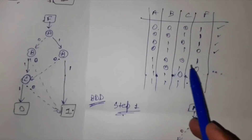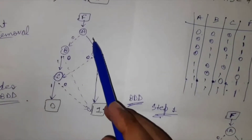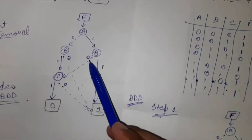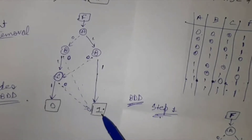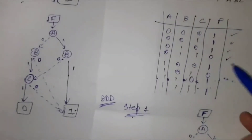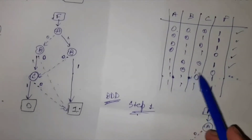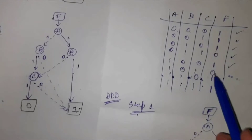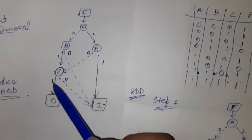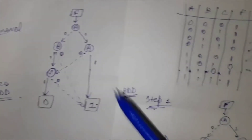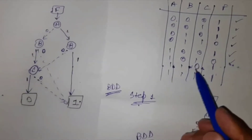The fifth one: 1, 0, 0 is 1. Checking — 1, 0, 0 gives 1. Fifth is also correct. Then 1, 0, 1 gives 0. Checking — 1, 0, 1 is 0. Sixth is also checked.